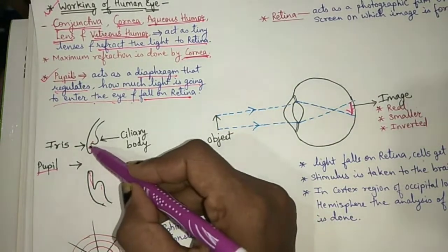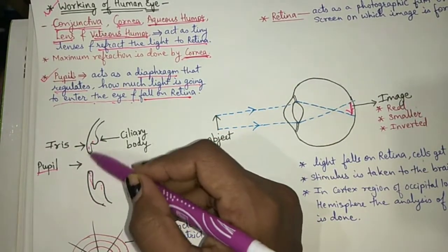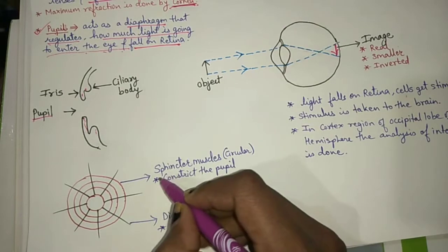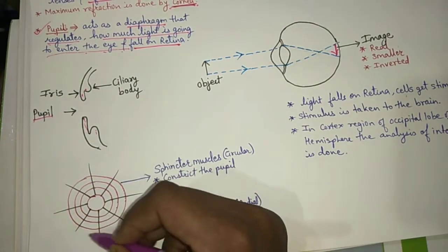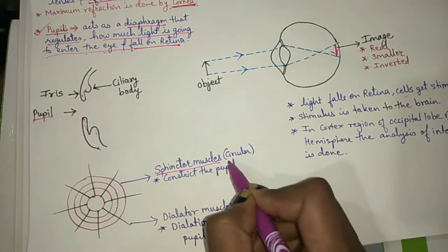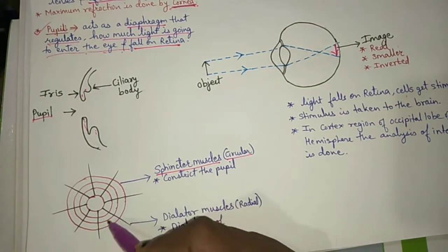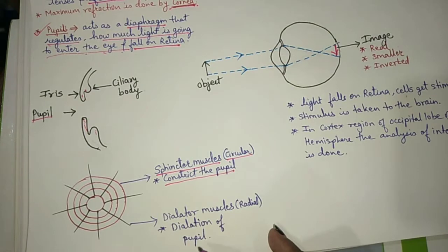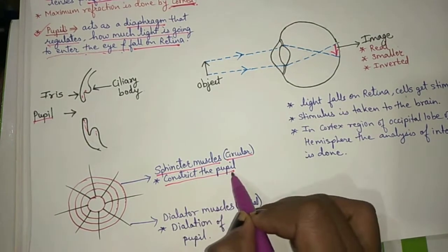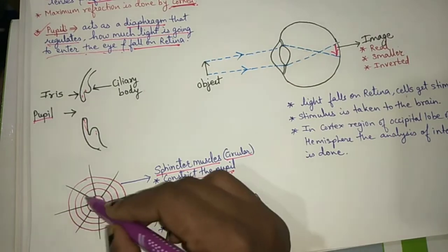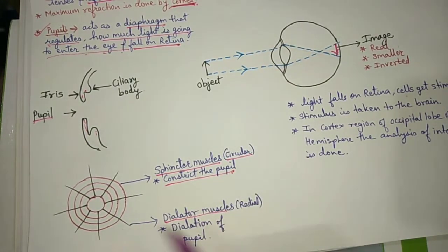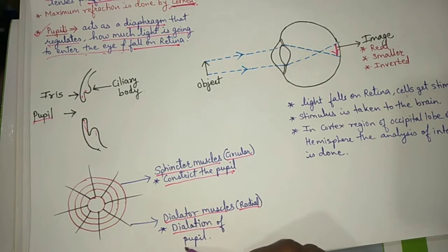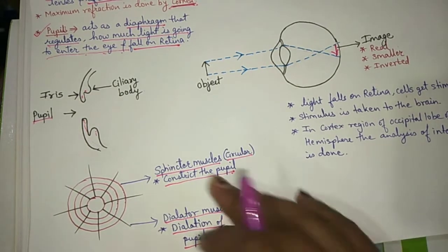The iris has two types of muscles. The circular muscles are called sphincter muscles, and their function is to constrict the pupil. The radially arranged muscles are called dilator muscles, and their function is dilation of the pupil.